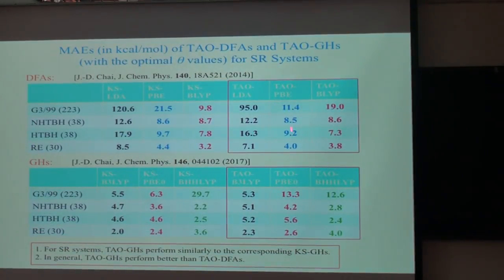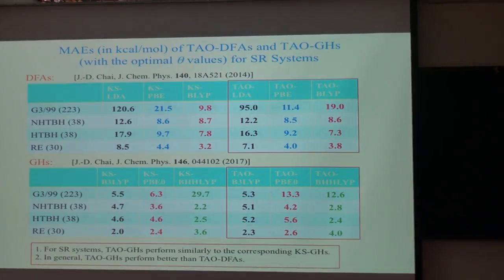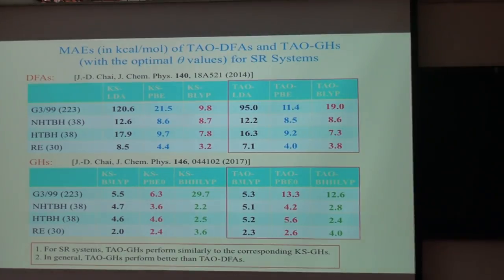The performance results show that for single-reference systems, tau GH performs similarly to the corresponding constrained DFT. In general, tau GH performs better than tau DFA, with the errors for hybrid functionals in tau DFT being the smallest among tau LDA, tau GGA, and tau GH.